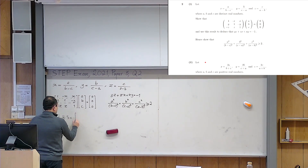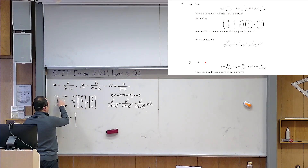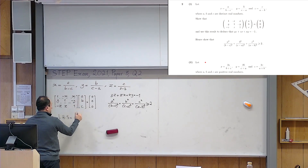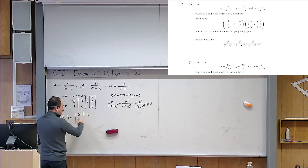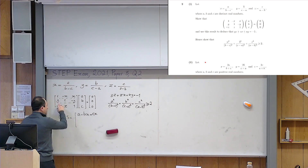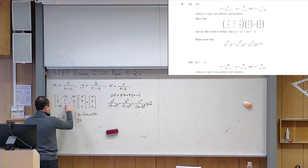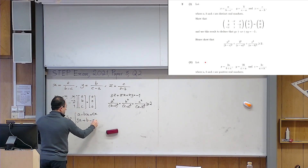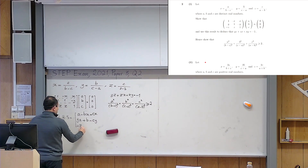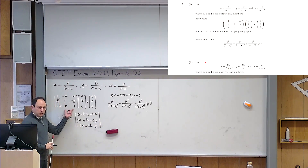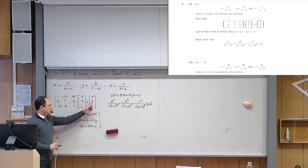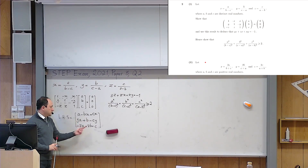For example, I take the first row and multiply it by the column matrix: the first entry times a becomes a, then minus bx, then cx — adding these to get the first result. Similarly for the second row: y times a, 1 times b, and minus y times c. And the third row gives minus za plus zb plus c.